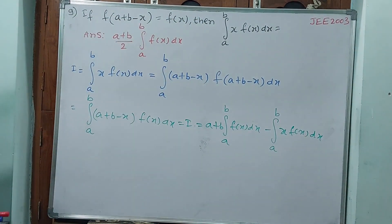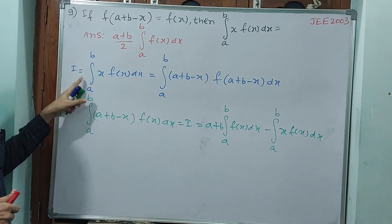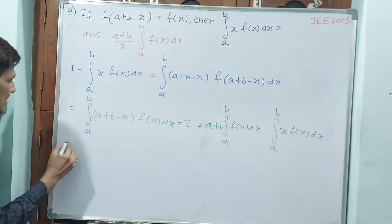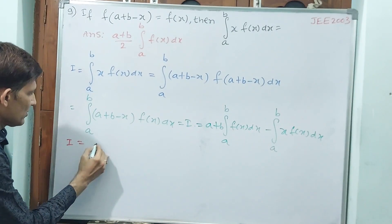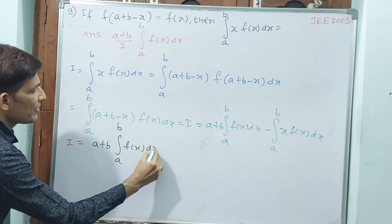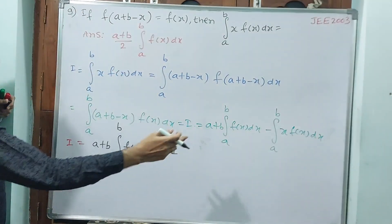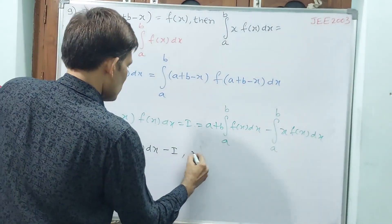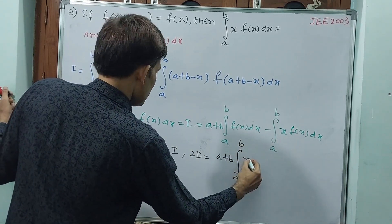Now you tell me — what is this? This is your I: integral from a to b of x f of x dx. So accelerate like this: I is equal to (a plus b) integral from a to b f of x dx minus I. Minus is there. Both are same — I and I. I plus I gives 2I: 2I is equal to (a plus b) integral from a to b f of x dx.